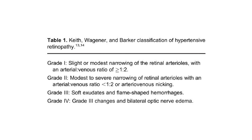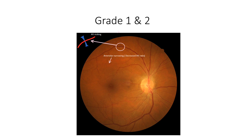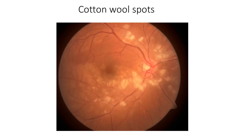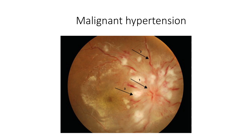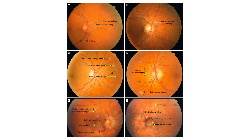Hypertensive retinopathy has many grades. Using the Keith-Wagener-Barker classification: in grade one and two you see AV-nicking and very narrow blood vessels. In the next stage, you see white fluffy spots called cotton wool spots, which are areas of focal ischemia. Finally, in malignant hypertension, the optic nerve is immensely swollen with engorged blood vessels in all quadrants and an associated macular star or macular fan. This is commonly seen in both eyes.